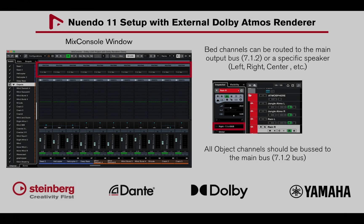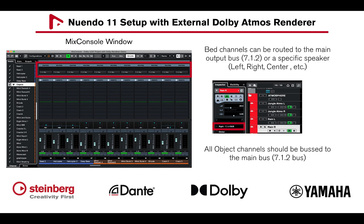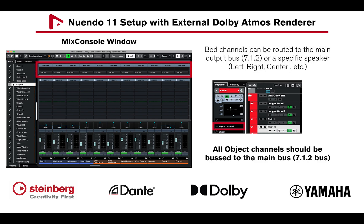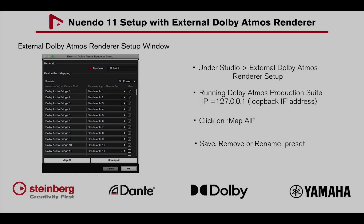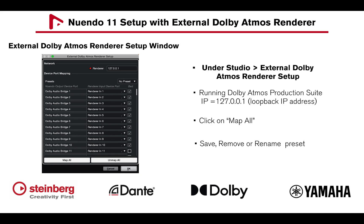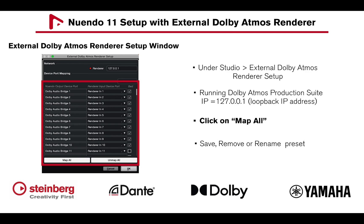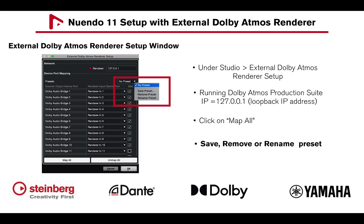Let's take a look at Nuendo 11's setup requirements when using the external Dolby Atmos Renderer. All bed channels should be routed to the main output bus 7.1.2 or a specific speaker, and all object channels should be bussed to the main bus. Open the External Dolby Atmos Renderer Setup window under Studio, and with the Dolby Atmos Production Suite, use the loopback IP address 127.0.0.1 to connect to the renderer. Click Map All to patch Nuendo's Dolby Audio Bridge driver output ports to the Dolby Atmos Renderer input ports. A preset can be saved, removed, or renamed.